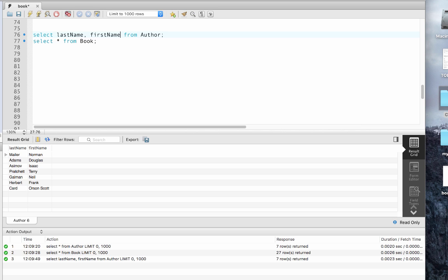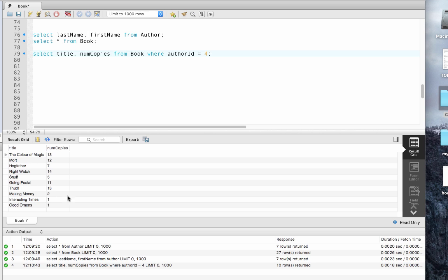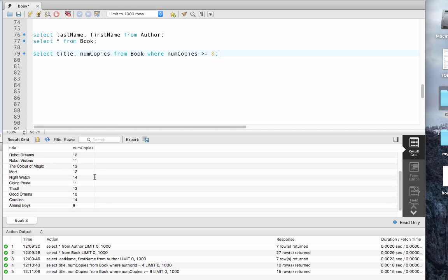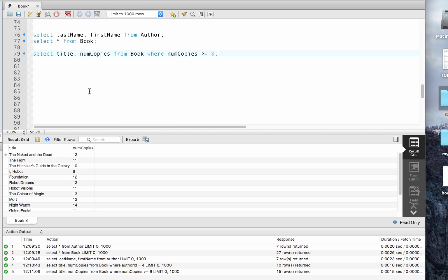Let's now select the title and num copies columns from the book table for books written by Terry Pratchett whose author ID is 4. Now let's select all books for which we have eight or more copies. We can use numerical comparison operators other than just the equality operator.